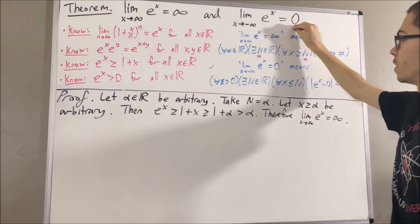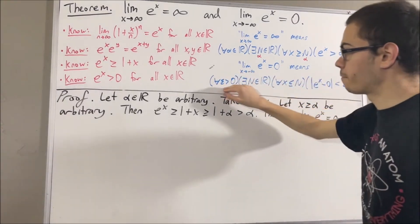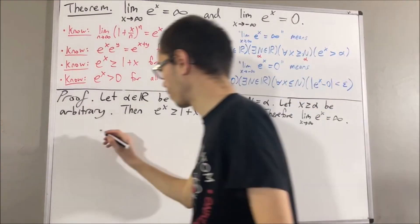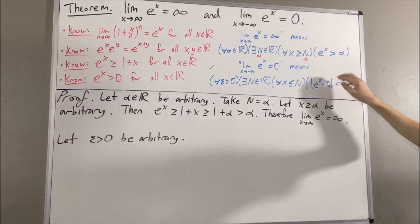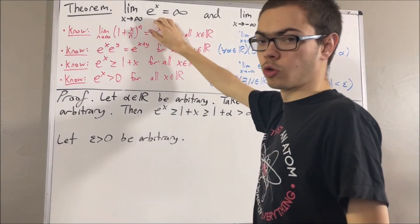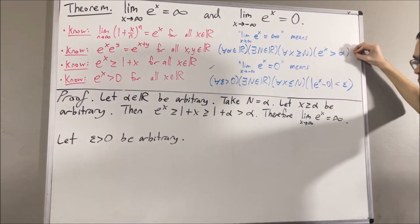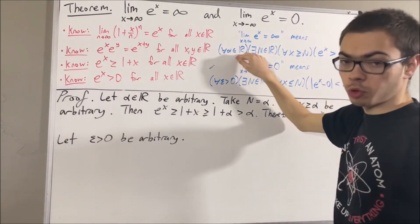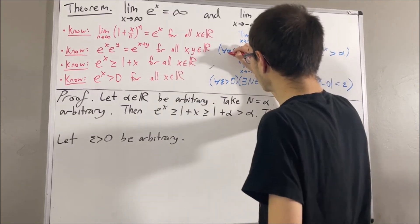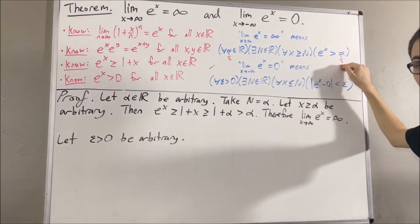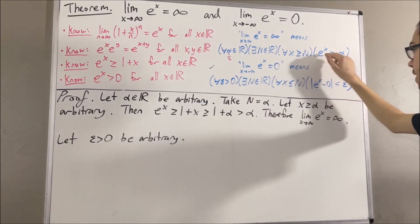Now let's prove the second limit. To prove this, that amounts to proving the formal statement. To prove a statement about every epsilon greater than zero, let's give ourselves an arbitrary epsilon greater than zero. From here, we want to find a real number capital N such that the statement is true. We can use the fact that the first limit is true. Since we know this statement works for every real number, in particular it must work for the real number 1 over epsilon. So taking alpha to be 1 over epsilon, there exists a real number capital N such that for all x greater than or equal to capital N, e to the x is greater than 1 over epsilon.